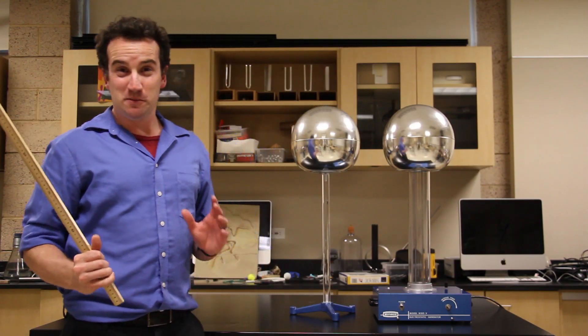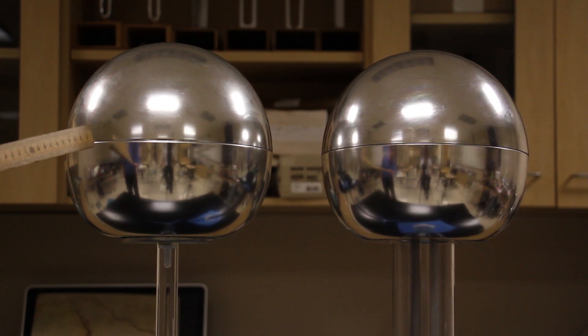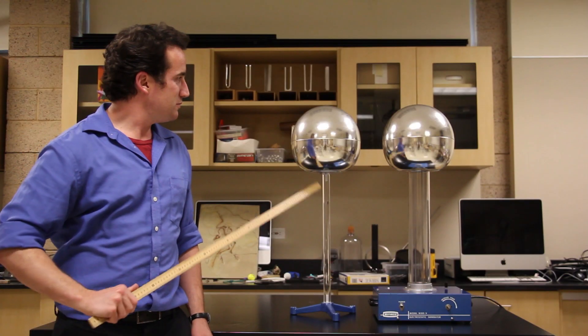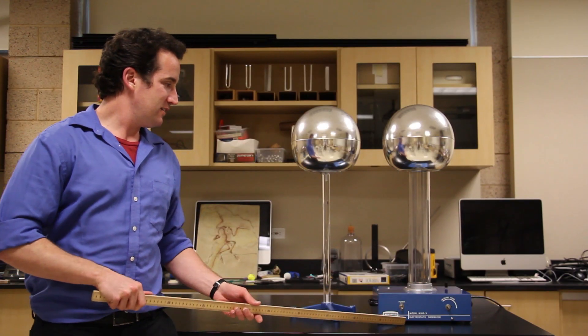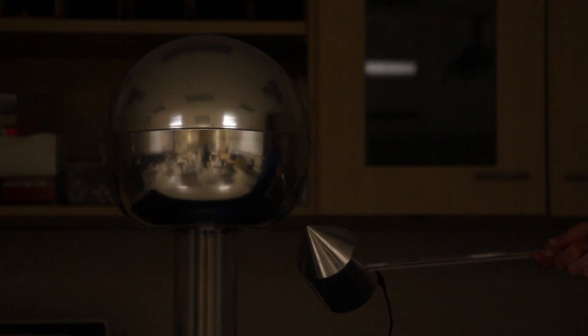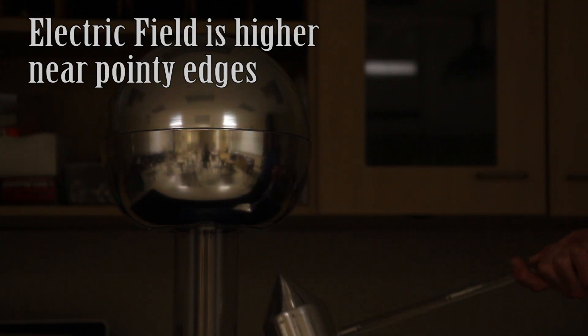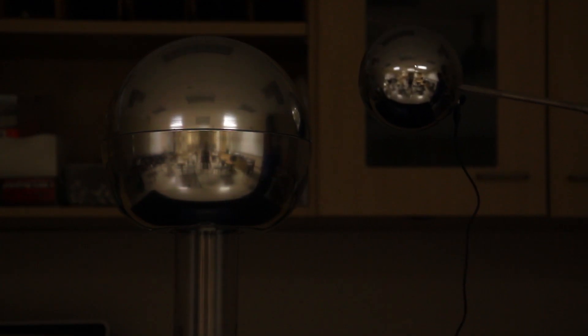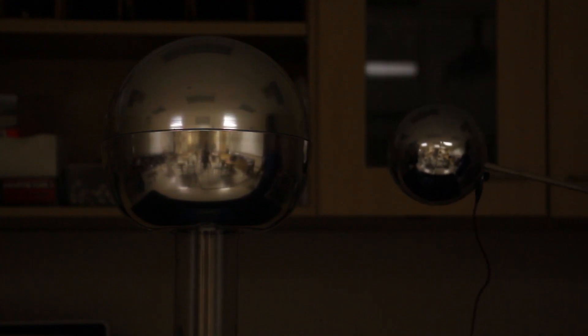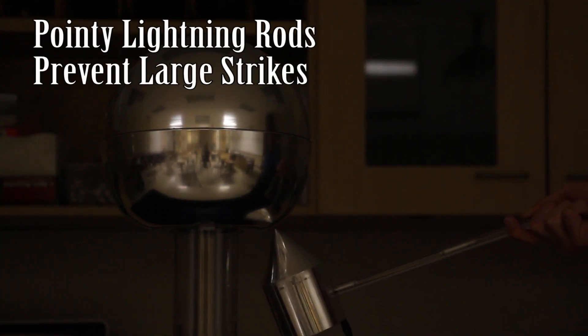The Van de Graaff generator is a must-have when teaching electrostatics and the electric field. For example, you can use it to show that the electric field is higher near pointy edges than rounder ones. You see, it is the electric field that ionizes the air and makes lightning. A pointy edge can do that easier, because the electric field is higher.